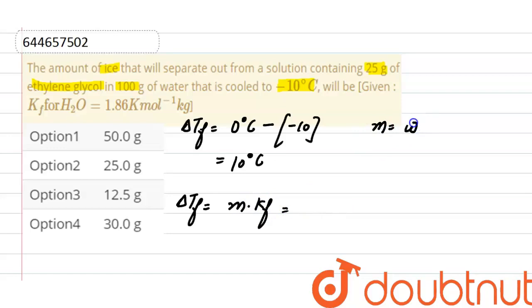Molality is equals to weight of solute divided by molecular weight of solute into weight of solvent in kilograms. Here, this weight of solvent is in which ethylene glycol is present, and from this amount some of the solvent is converted into ice. So here we will find out that amount of solvent in which ethylene glycol is present. Putting the values here, delta Tf is 10.